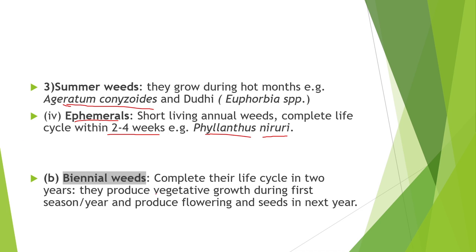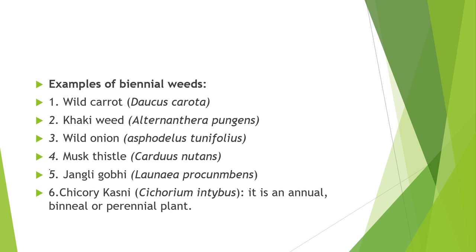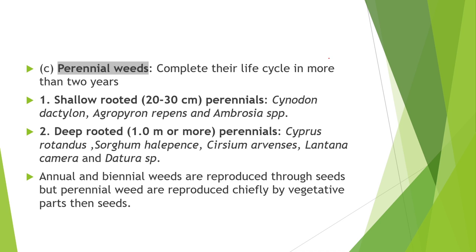Second type of weed based on lifespan is biennial weeds — they complete their life cycle in 2 years. Examples are wild carrot, khaki weed, wild onion, musk thistle, wild gobi, and chicory. Chicory is an example of annual, biennial, and perennial plant. Third is perennial weeds — they complete their life cycle in more than 2 years. They are classified into shallow rooted (depth 20–30 cm) and deep rooted (depth 1 m or more).